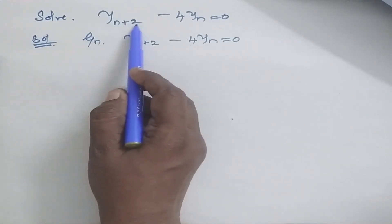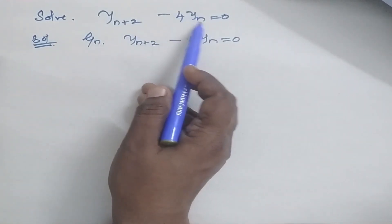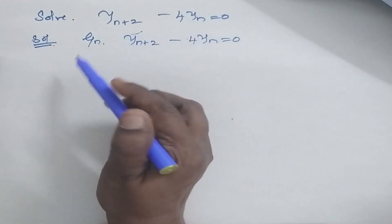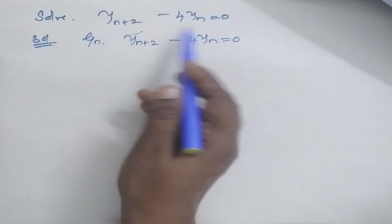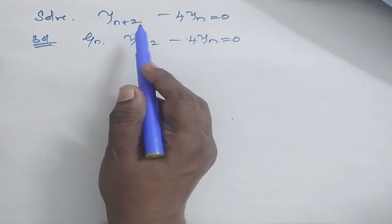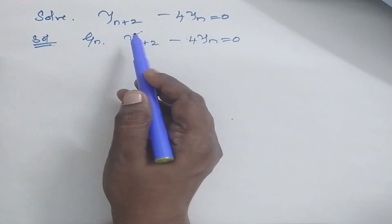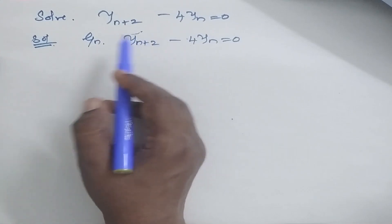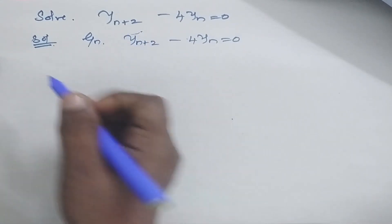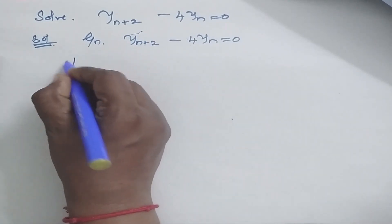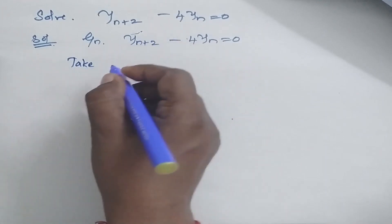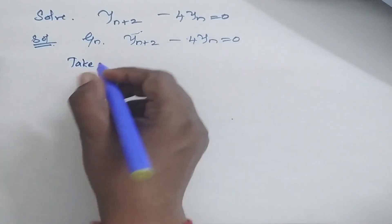Solve y(n+2) minus 4y(n) is equal to 0. The given equation is this, and we are going to solve this using Z-transform and inverse Z-transform. Now I am going to take Z-transform on both sides of this equation.